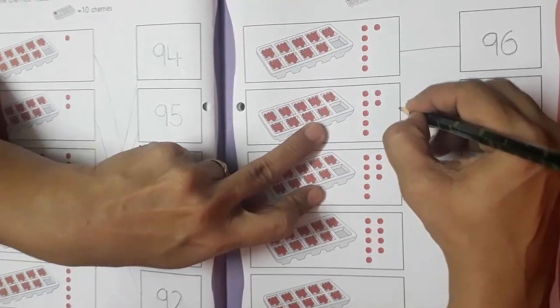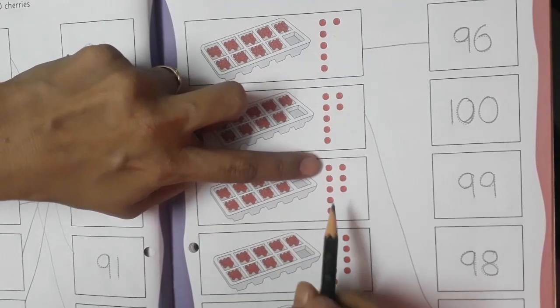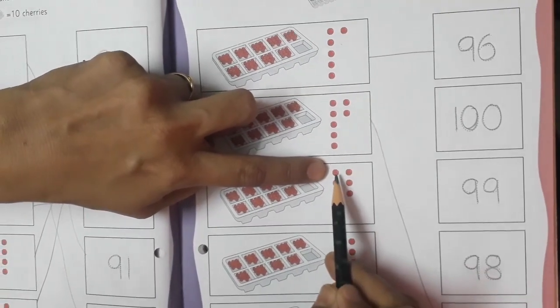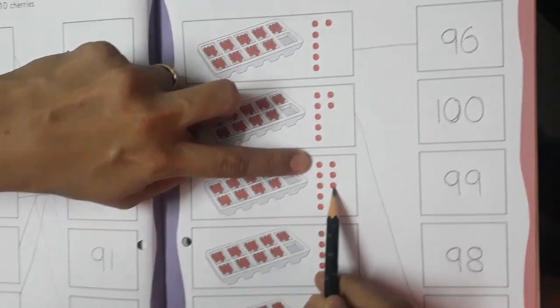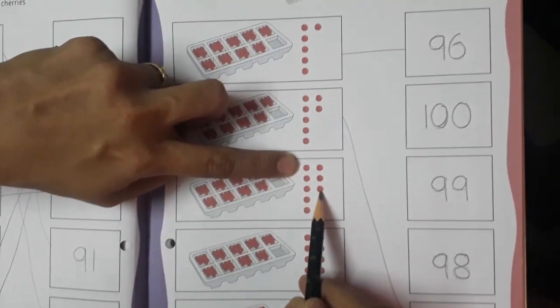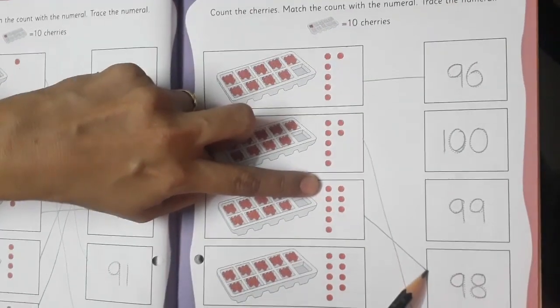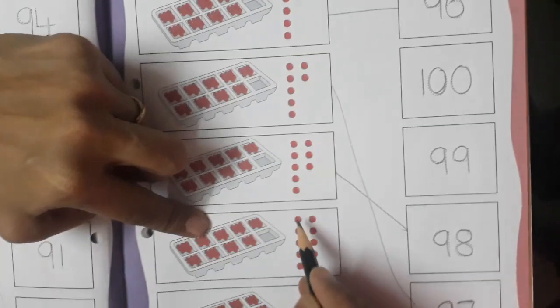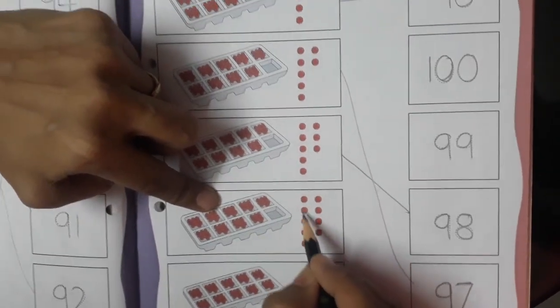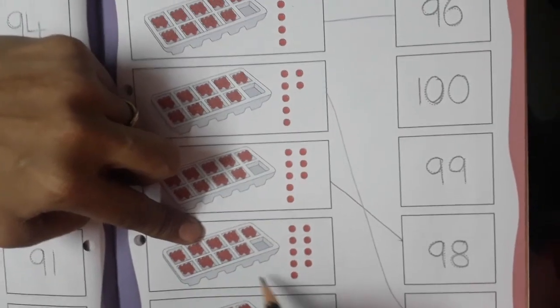Now here let's count these cherries in box number 3: 1, 2, 3, 4, 5, 6, 7, and how many cherries? 8. So 90 and 8, how much? 98. Yes. Now here once again we will count in the fourth box: 1, 2, 3, 4, 5, 6, 7, 8, and 9. So 90 and 9.